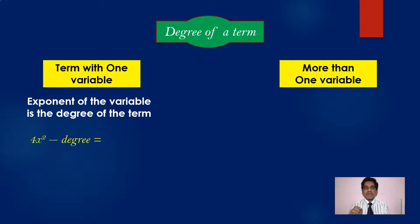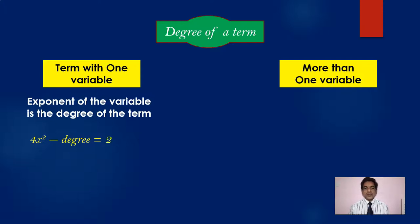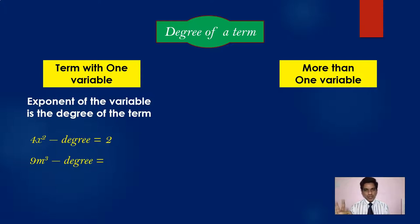For example, in 4x square, the variable is x and the exponent of x is 2, so the degree of this term is 2. In 9m power 3, the variable is m and the exponent of m is 3, so the degree of that term is 3.